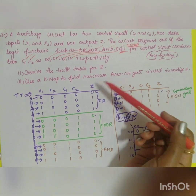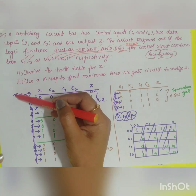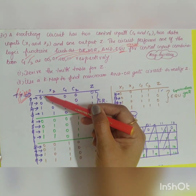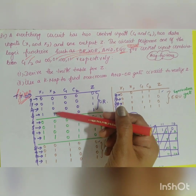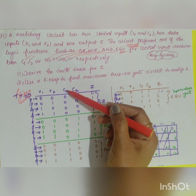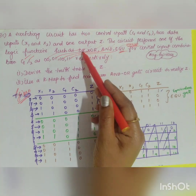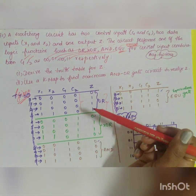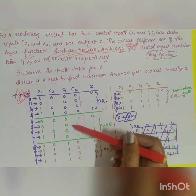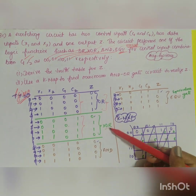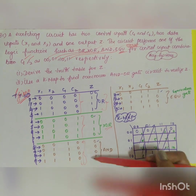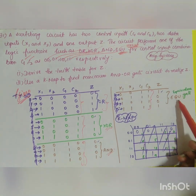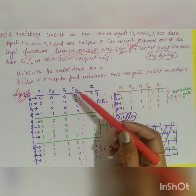To draw the truth table, we have two data inputs x1 and x2 with combinations 00, 01, 10, 11, and control inputs c1 and c2. For c1c2 = 00, it acts as an OR gate. For 01, it acts as XOR. For c1c2 = 10, it acts as an AND gate. For 11, it acts as an XNOR or equivalence gate.